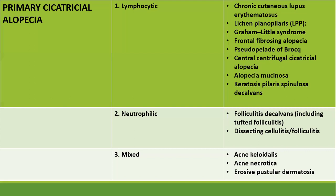If primary cicatricial alopecia is associated with mainly neutrophils in and around the hair follicles in the dermis, causes include folliculitis decalvans, tufted folliculitis, dissecting cellulitis of scalp, and folliculitis. There are also mixed conditions in which both lymphocytes and neutrophils may be found, as seen in acne keloidalis, acne necrotica, and erosive pustular dermatosis.